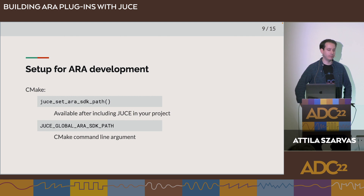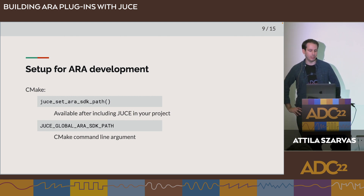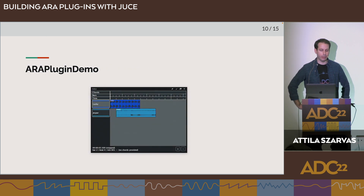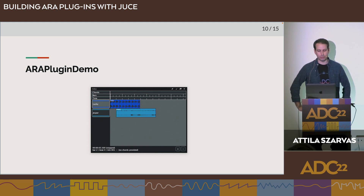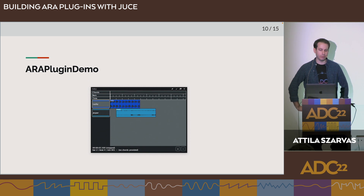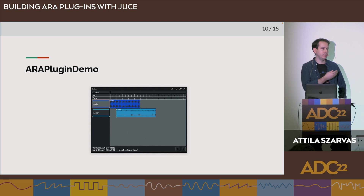Once done, you will be able to build the ERA plugin demo — either from the producer examples, or if you have configured CMake to build the JUICE examples and also configured the ERA SDK path, that target will become available to you. I'm now going to ask Stefan to demonstrate some of the features that are only possible through ERA.